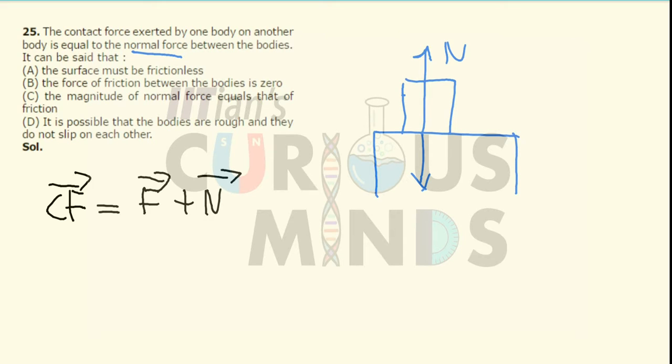Now the contact force will be equal to the friction force, which implies that the friction force is equal to the normal force, which implies that the friction force must be equal to zero. So the friction force between the bodies is equal to zero, which is option B.